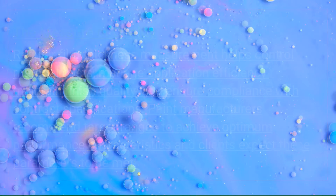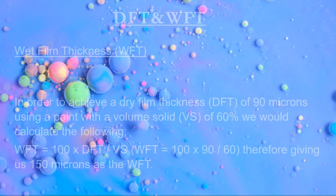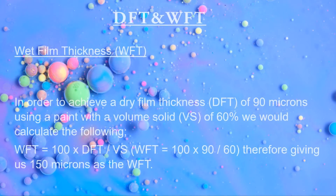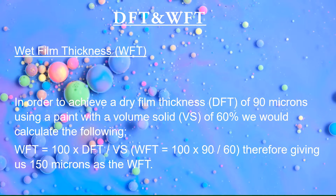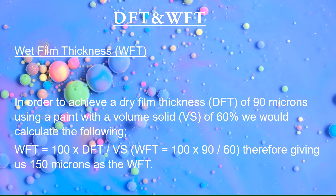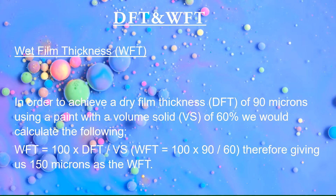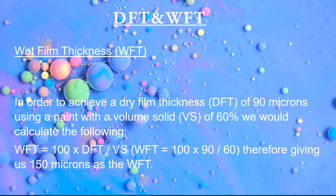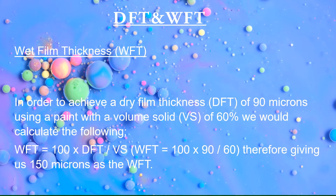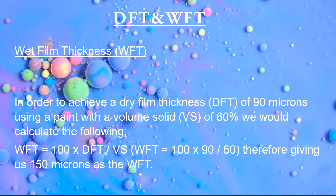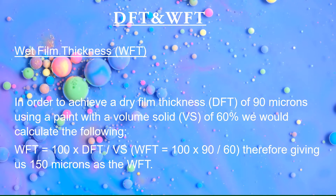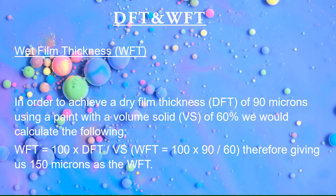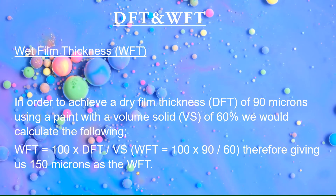When the required calculation is in reverse and you are looking to obtain a dry film thickness (DFT), the following formula applies: DFT = (WFT × volume solid) ÷ 100. So using the same numbers: 150 × 60 ÷ 100 gives you 90 microns DFT.